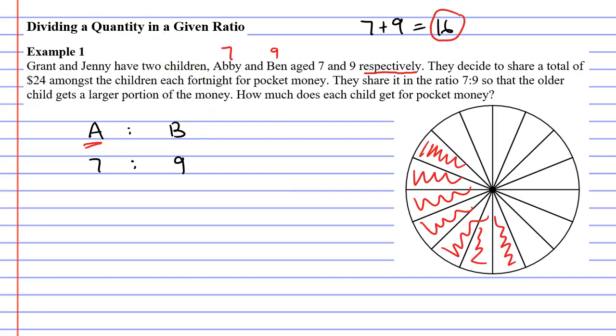Ben, who we'll make green, is getting nine parts of the pizza. So he's going to get the rest. What we need to do is figure out how much money is representative of one slice of pizza.